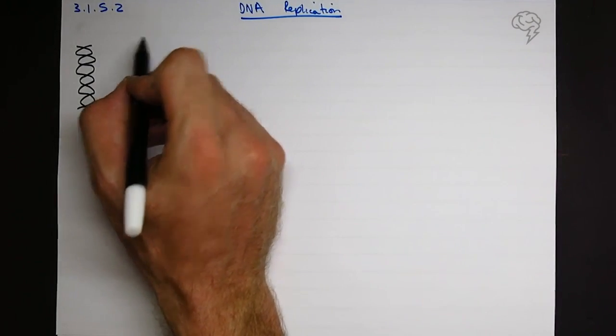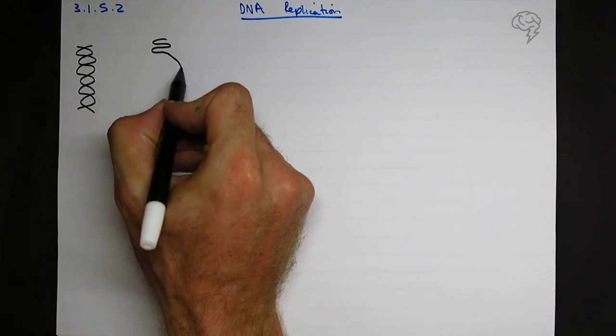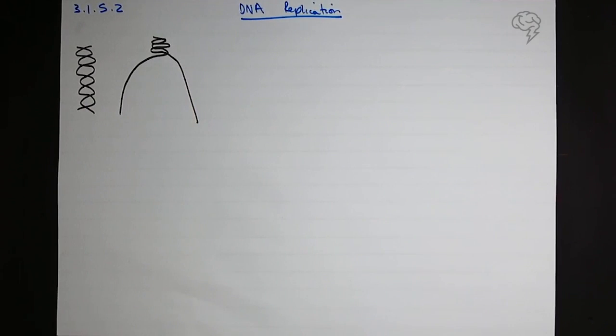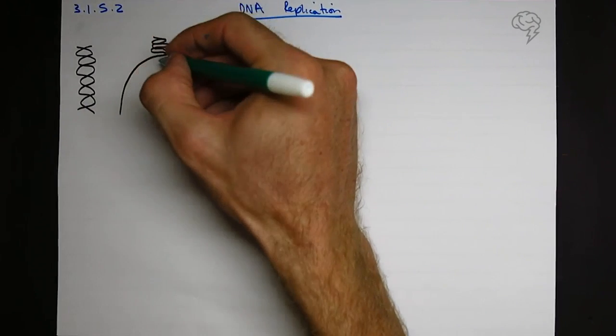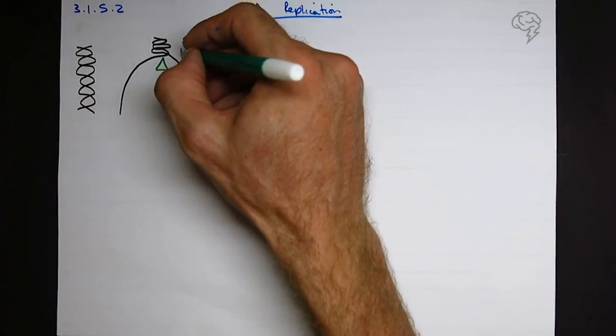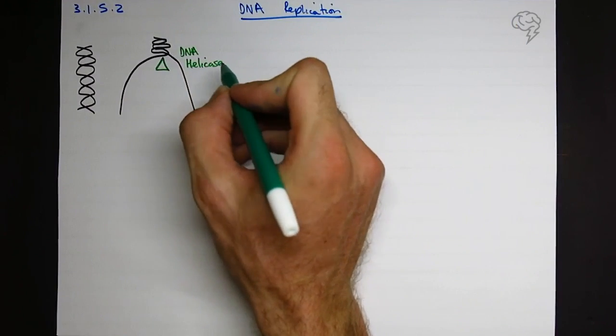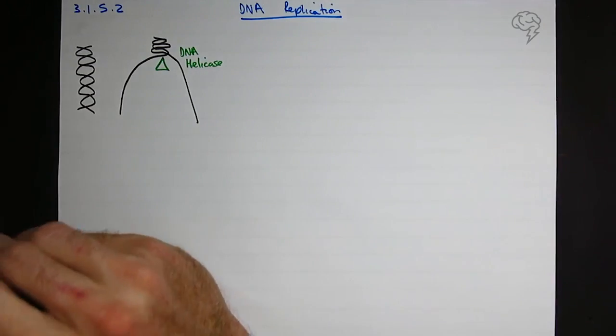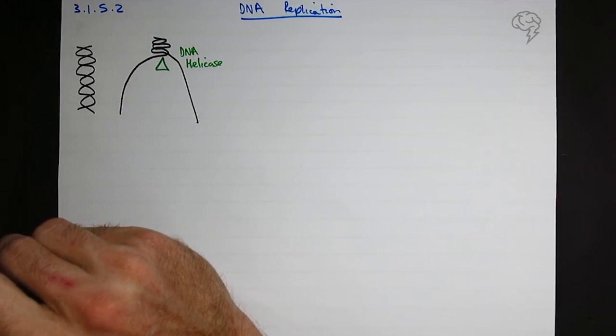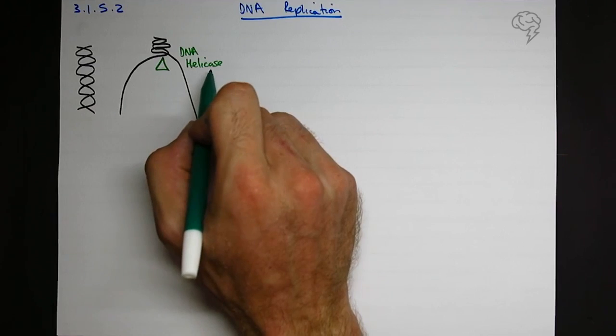So the first step, the DNA can't copy when it's like this. It needs to be unwound. And this is done by an enzyme. This enzyme is called DNA helicase. Anything ending in ASE is always an enzyme. DNA helicase, amylase, ribulose bisphosphate carboxylase, neuraminidase. Any ASE is an enzyme, and therefore it's also a protein. That's often a backhanded question that they get asked in the specification very often.